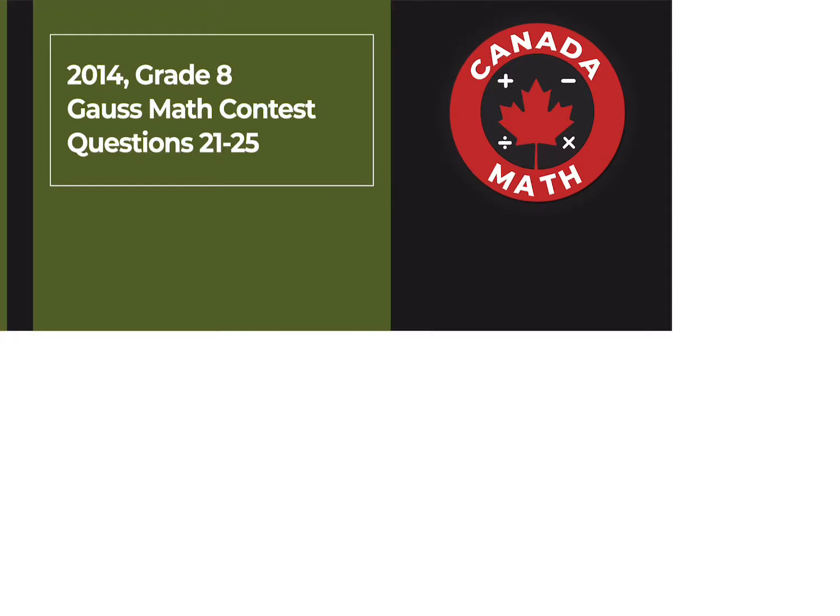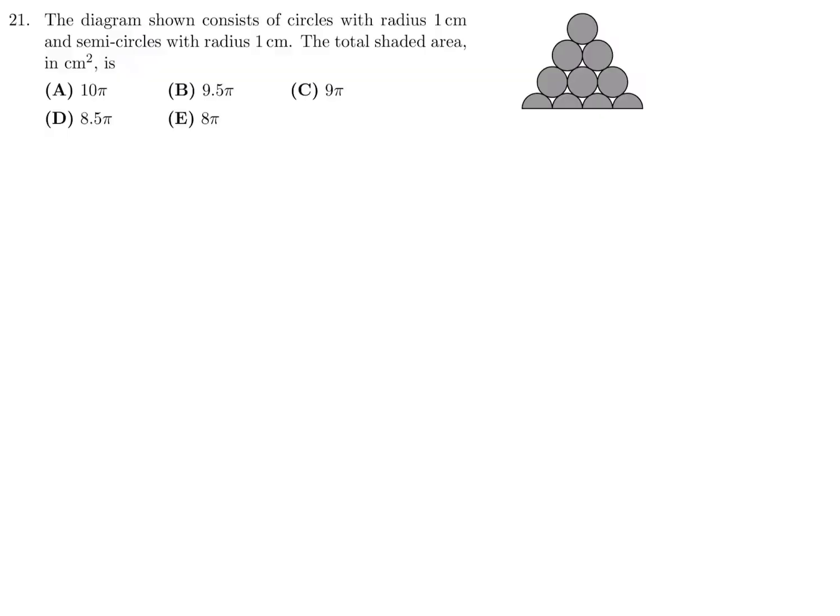Questions 21 through 25 on the 2014 Grade 8 Gauss Math Contest. The diagram shown consists of circles with radius 1 cm and semicircles with radius 1 cm. The total shaded area is...